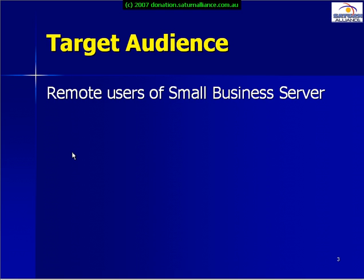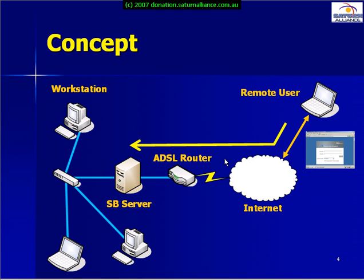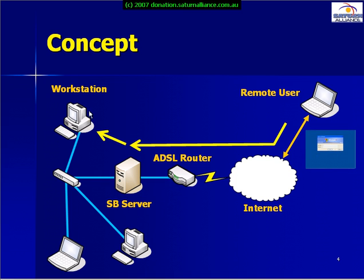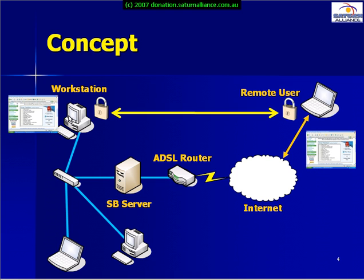The target audience for this video are remote users of Small Business Server. What we're trying to achieve here is a remote user being able to access a workstation on a network with a Small Business Server. The remote user logs into a web page which connects them to the Small Business Server, then logs in to a nominated workstation on the local area network. Once this login is successful they set up a secure path between their remote PC and the workstation on the network, allowing them to work as though they were sitting in front of their workstation even though they are remotely connected to the internet.